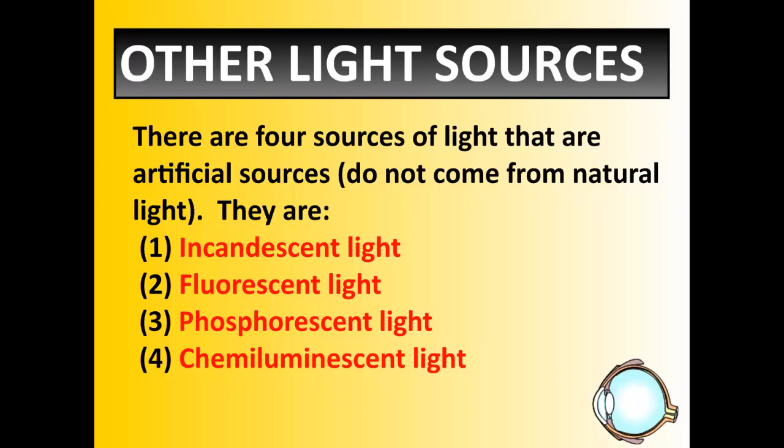So, knowing the natural sources of light — fire, sun, and bioluminescence — as well as the four sources of artificial light — incandescent, fluorescent, phosphorescent, and chemiluminescent — are important to know, just so we have an idea of where light is coming from and what types of light sources are available to us. That's it for this screencast. I hope you enjoyed it and found something useful.